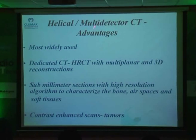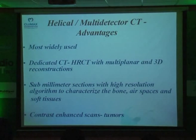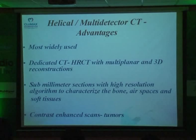The biggest advantages of multi-detector CT are: you can do a high-resolution CT especially for bone, take a sub-millimeter section, and use contrast for tumors. But as Dr. Manoj aptly put it, there is a problem with CT in terms of evaluation of soft tissue, more so the cranial nerves. You can look at the canals very well because they are cortical bone, but when it comes to soft tissue, your resolution is extremely poor — so it's a big no for CT.